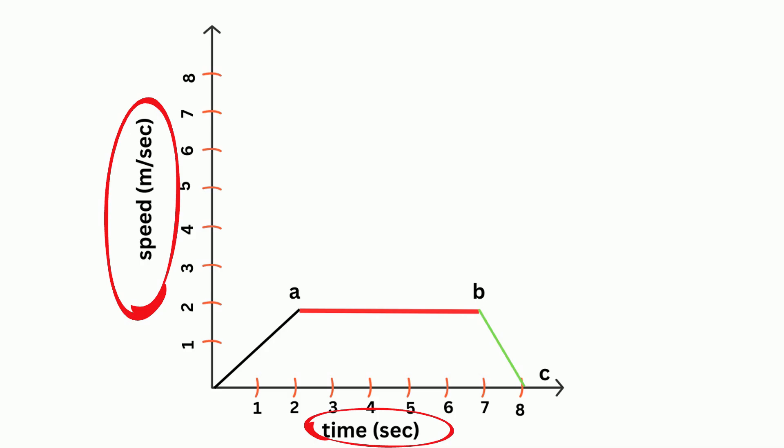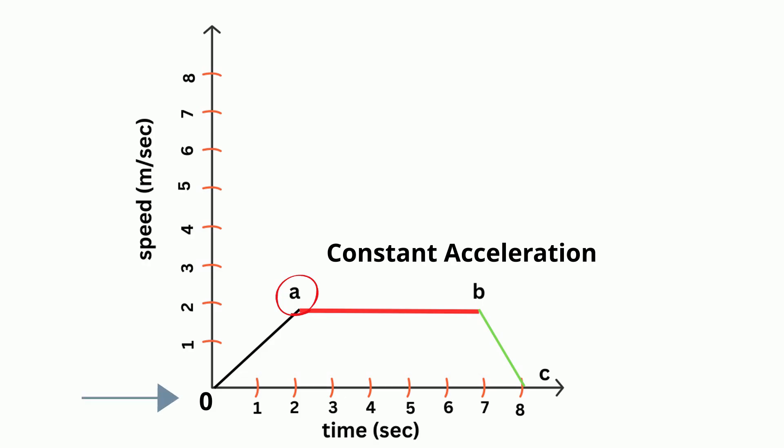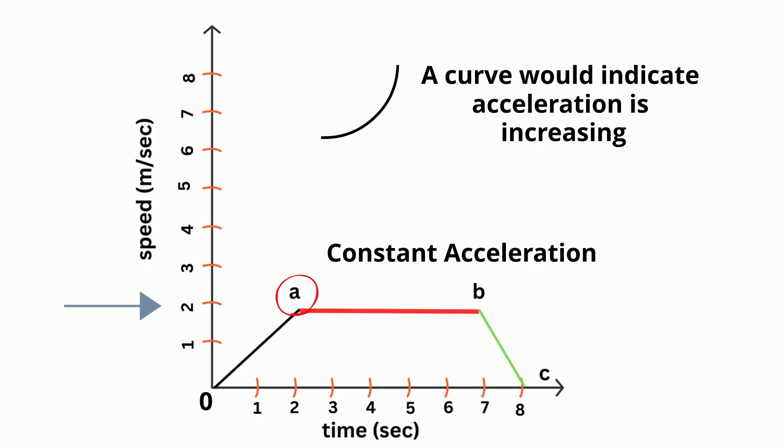Let's first figure out from zero to a. That would be titled constant acceleration because it started at zero and it ends at a at two meters per second.